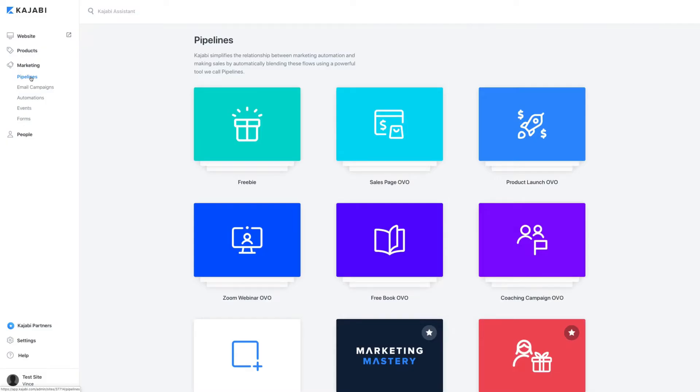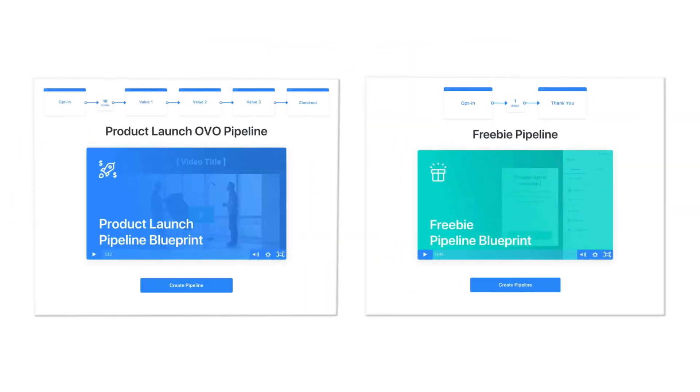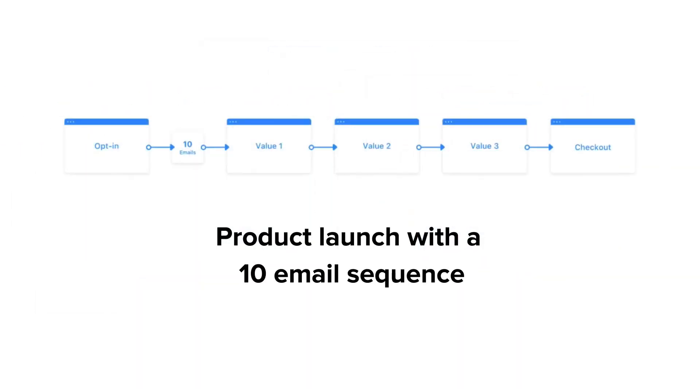The awesome thing is, when you first create a pipeline or marketing funnel in Kajabi, a new email sequence is created automatically based on whatever pipeline you created. So if you created a freebie pipeline or a product launch pipeline, the email sequence will cater to each pipeline respectively. All you have to do is fill in the email copy. How cool is that?